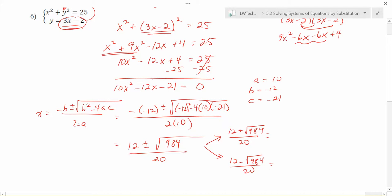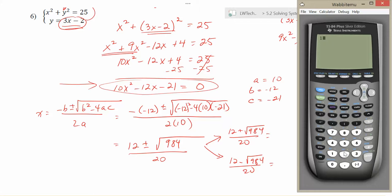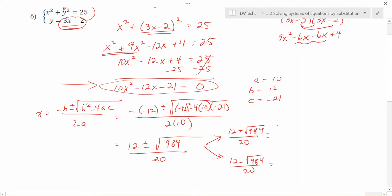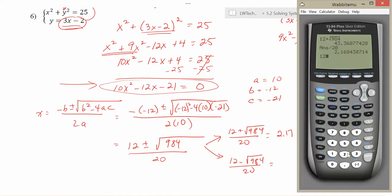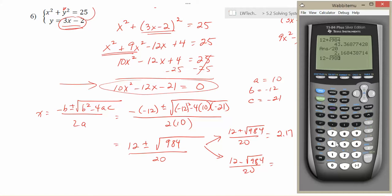Now keep in mind that what we're solving here for, based on this equation here, is values of x. So we're finding x values. And it looks like we're getting two different solutions at this point. So we have 12 plus radical 984, get that answer and then divide it by 20, which is, we'll call it 2.17. And then we'll do the same thing here for the minus. So we'll do 12 minus radical 984, and then divide that answer by 20, which is negative 0.97.